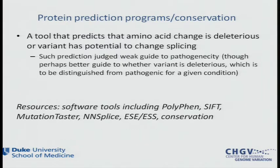That said, prediction programs are an entirely appropriate filter for where to concentrate your energy. If you had two graduate students following up a set of candidate variants and divided them into PolyPhen benign and PolyPhen damaging, you'd probably prefer to be the graduate student who got the damaging variants to work on. But that is not an argument that they're pathogenic — it's just an order for how you do follow-up work to try to get some other evidence that these variants are actually doing something.